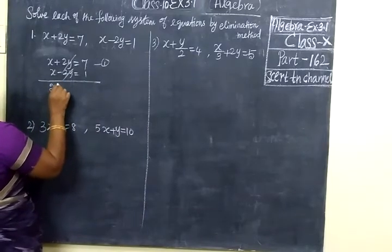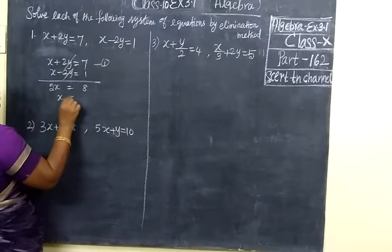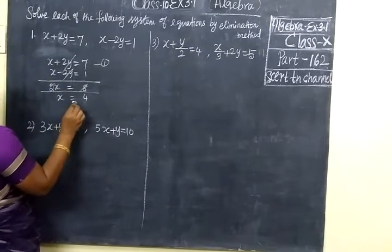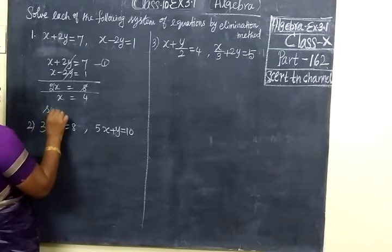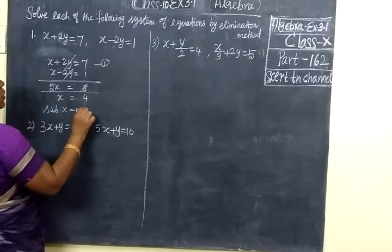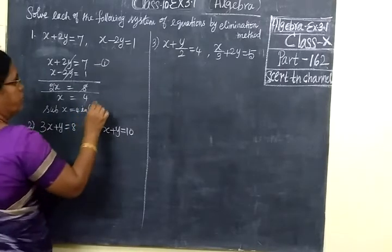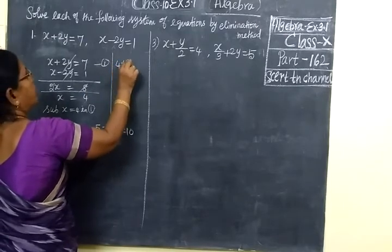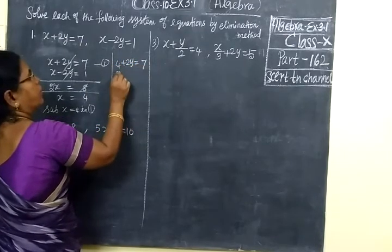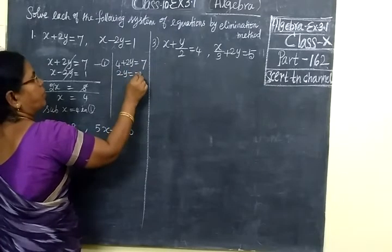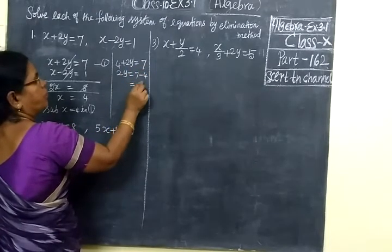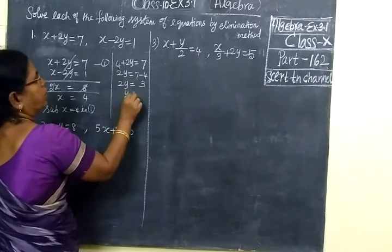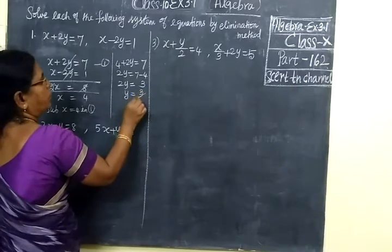Here you write 2x equal to 8, which implies x equal to 4. Now substitute x equal to 4 in any one equation — we take the first equation. So substituting 4: 4 plus 2y equal to 7. Therefore 2y equal to 7 minus 4, which is 3. So 2y equal to 3, then y equal to 3 by 2.